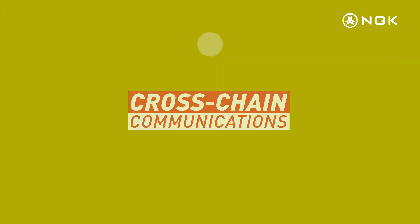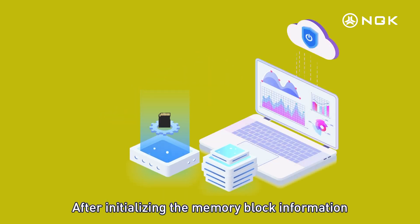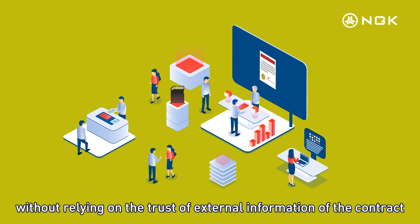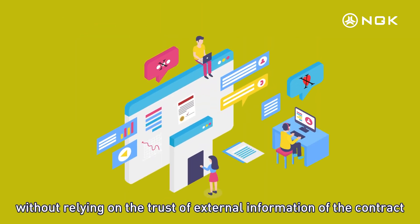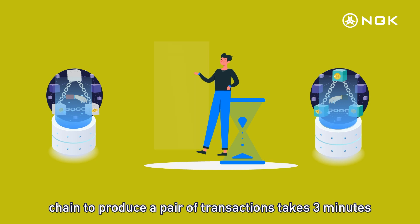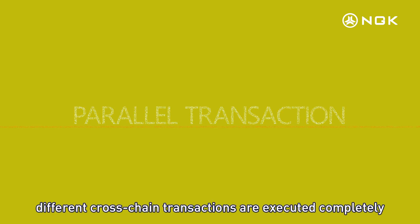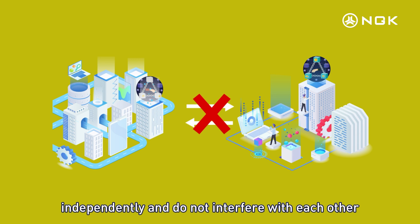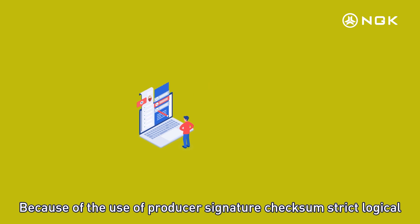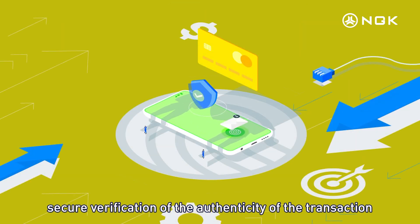Cross-chain Communications. All cross-chain communications are completed in a fully decentralized environment. After initializing the memory block information, the validity of all subsequent memory blocks can be verified independently by smart contract without relying on external trust. Rapid Confirmation: cross-chain transactions from initiation to the corresponding chain take approximately 3 minutes to produce a paired transaction. Parallel Transaction: different cross-chain transactions are executed completely independently and do not interfere with each other. Security: producer signature checksums and strict logical checks ensure transactions will not be subject to malicious attacks, securing verification of transaction authenticity.